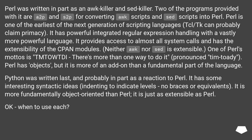Perl was written in part as an Awk killer and a Sed killer. Two of the programs provided with it are A2P and S2P for converting Awk scripts and Sed scripts into Perl. Perl is one of the earliest of the next generation of scripting languages — TCL/TK can probably claim primacy. It has powerful integrated regular expression handling with a vastly more powerful language. It provides access to almost all system calls and has the extensibility of the CPAN modules. Neither Awk nor Sed is extensible. One of Perl's mottos is TIMTOWTDI — there's more than one way to do it. Perl has objects, but it is more of an add-on than a fundamental part of the language.